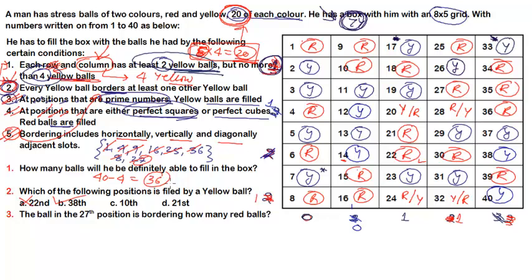Question 3 asks: the ball in the 27th position is bordering how many red balls? Slot 27 itself is a red ball. Checking its neighbors: we count 4 confirmed red ball neighbors. Additionally, among slots 20 and 28, one will be red and the other yellow, contributing exactly one more red ball. So the total number of red balls bordering slot 27 is 5.